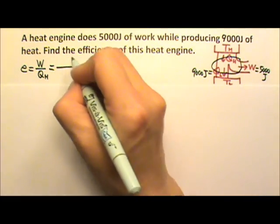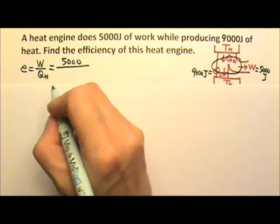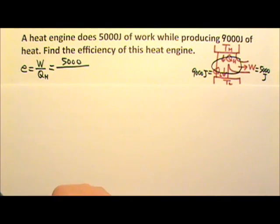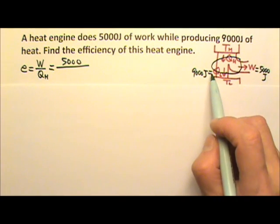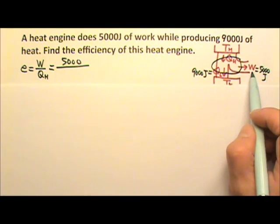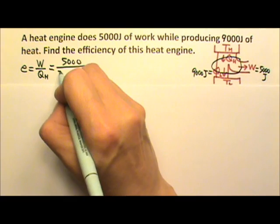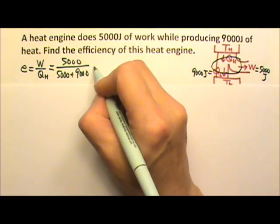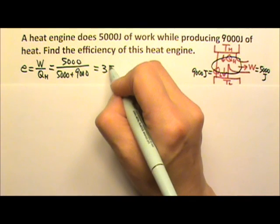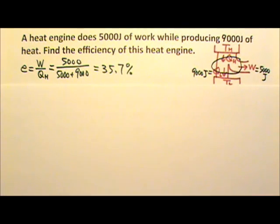So W is 5,000. What do you think QH equals? Because energy is conserved, the QH splits into QL and W, that means QH must be 5,000 plus 9,000. So this will give us 35.7%. That's the efficiency of this heat engine.